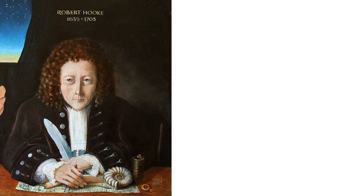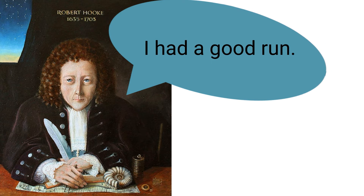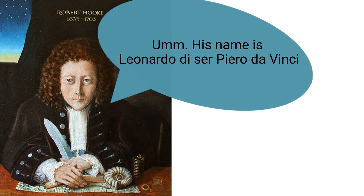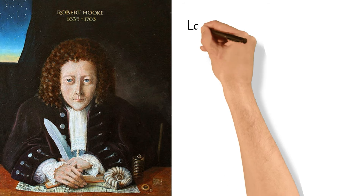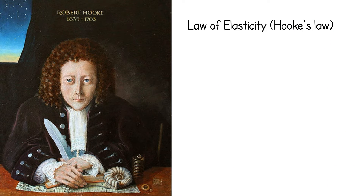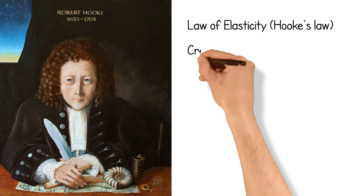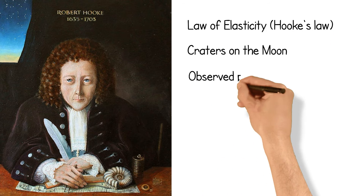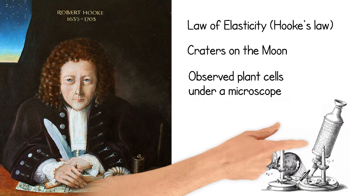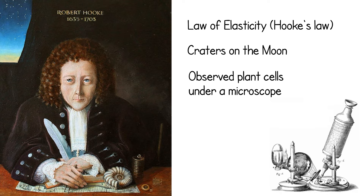Robert Hooke, 1635–1703. Once described as London's own Leonardo da Vinci, this man discovered the loss of elasticity and also investigated craters on the moon. His study of plant diseases under a microscope led him straight to plant pathology.